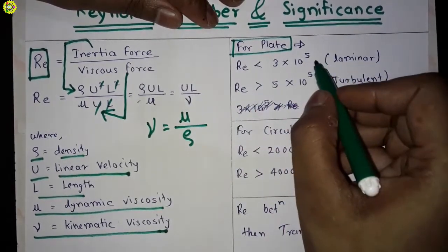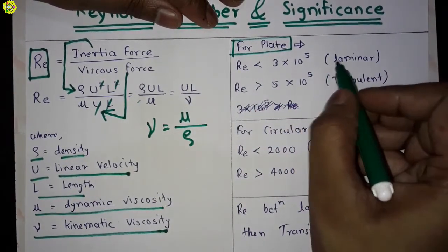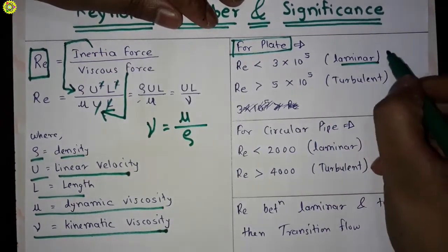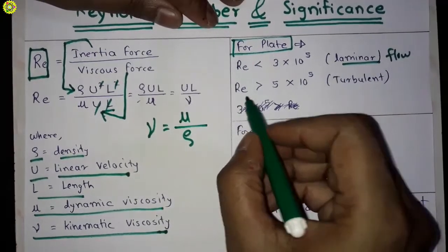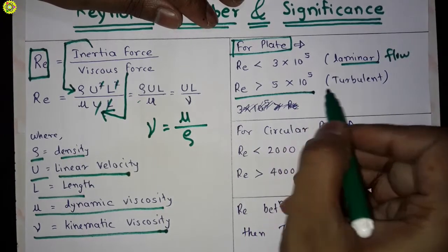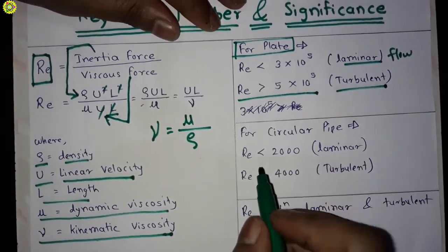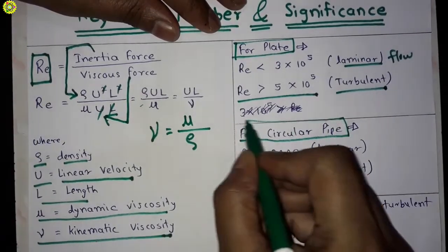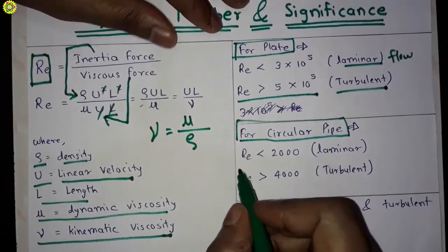And if Reynolds number is greater than 5 times 10 to the power 5, then it is turbulent flow. Further, for circular pipe, if Reynolds number is less than 2000, then it is laminar flow.